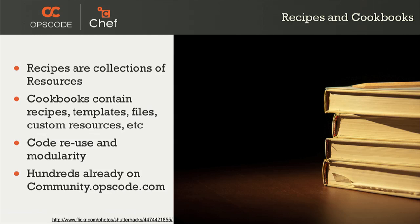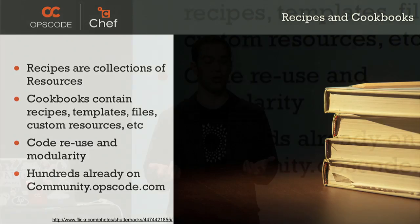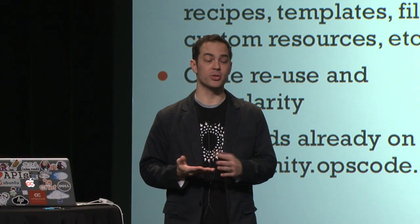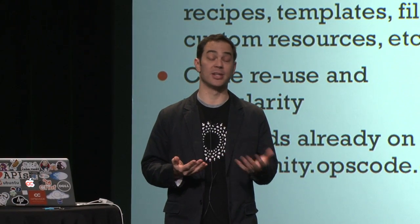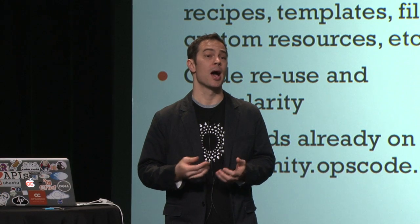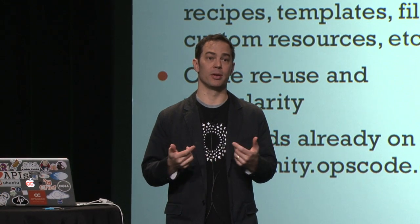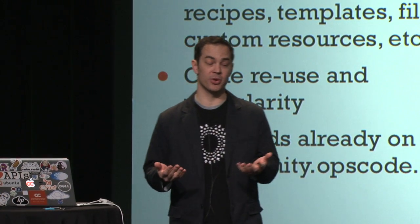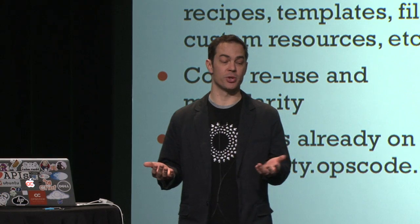Inside that cookbook are recipes. A recipe is the actual Ruby code that runs on your machines and configures how they're set up. The cookbook also contains templates for config files, which you can share across all your machines, as well as any scripts or other resources you may need.